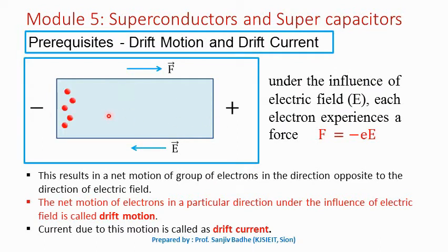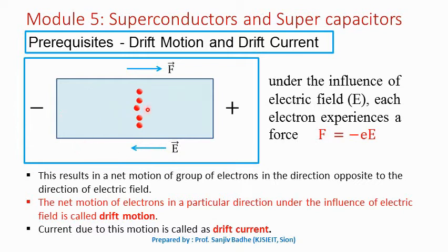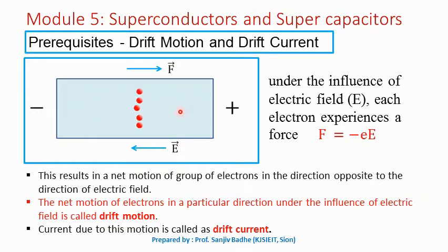Now, when we apply an electric field across this conductor, under the influence of the electric field, each of these electrons will experience a force F in the direction opposite to the direction of the electric field. Here the electric field is acting in this direction and the force on the electrons will act in the opposite direction, because force is equal to minus e times E. So this will result in net motion of the group of electrons in the direction opposite to the direction of electric field.